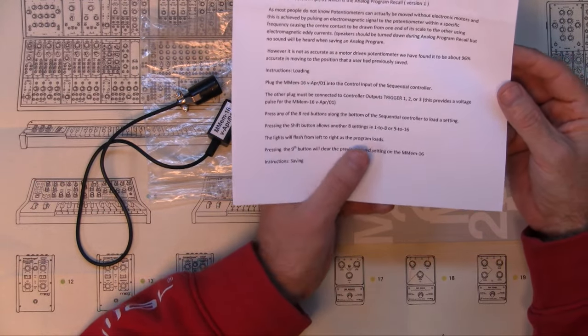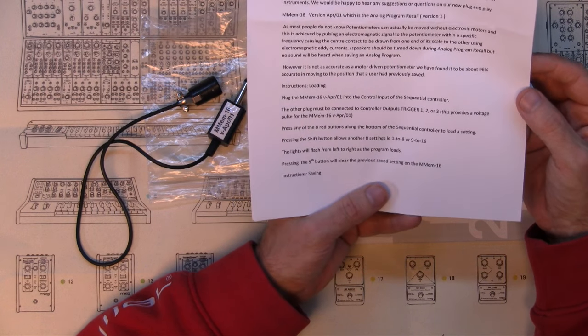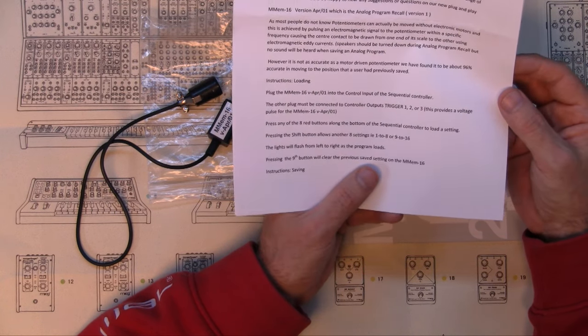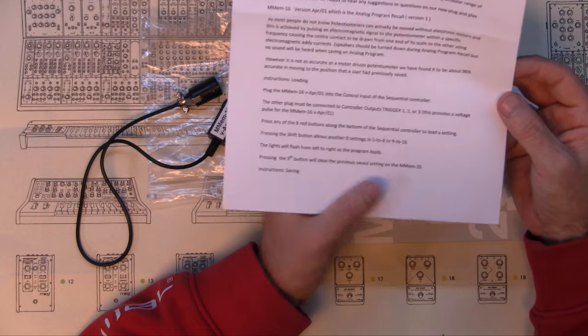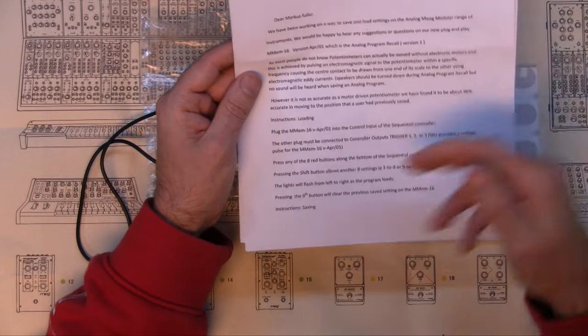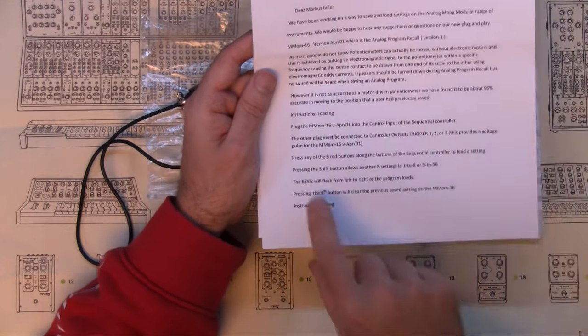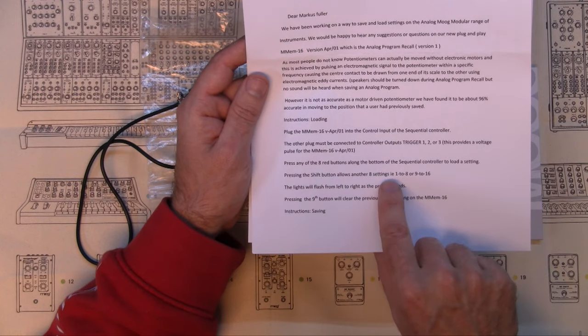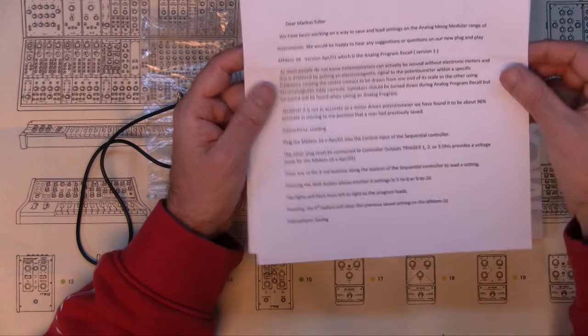Press any of the eight red buttons along the bottom of the sequential controller to load a setting. And the lights will flash from left to right as the program loads. Pressing the ninth button will clear the previous setting. But that's only eight. Oh right, pressing the shift button allows another eight settings, i.e. one to eight or nine to 16.